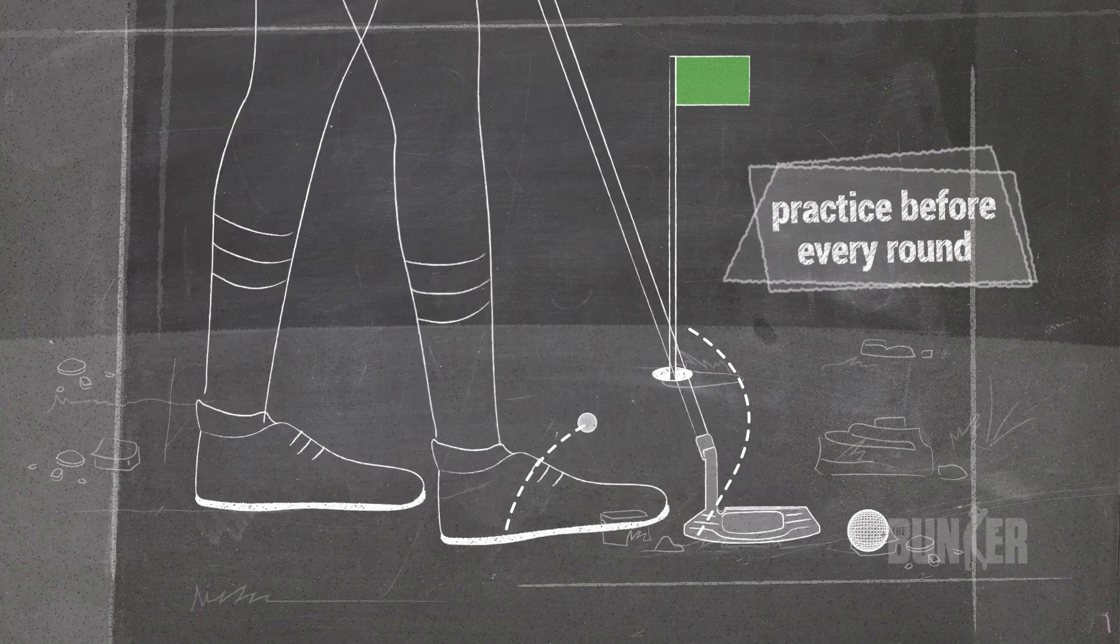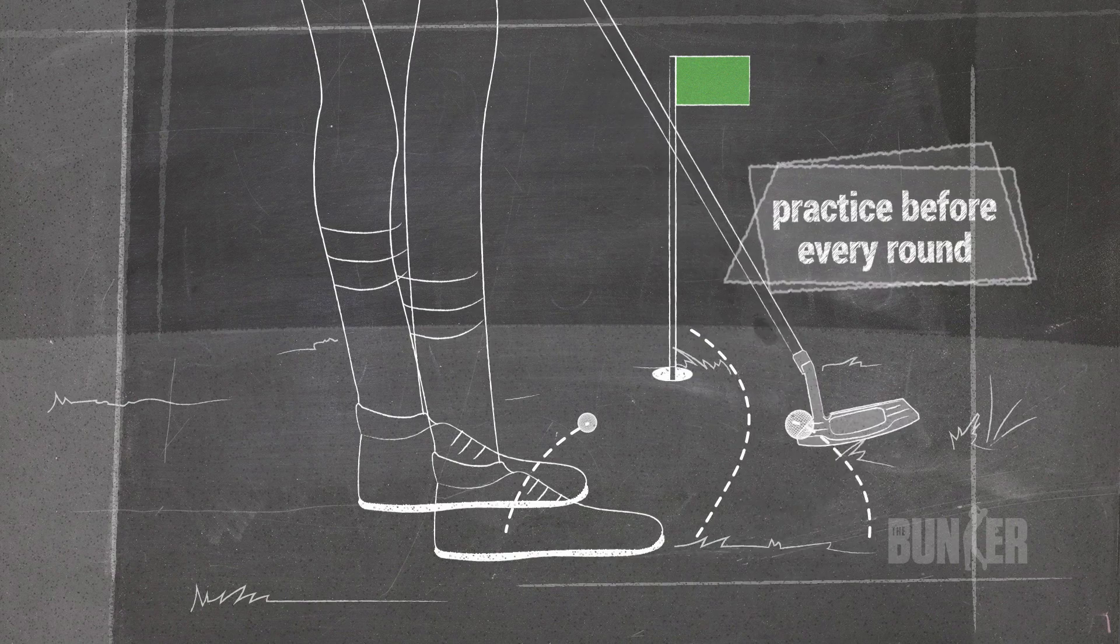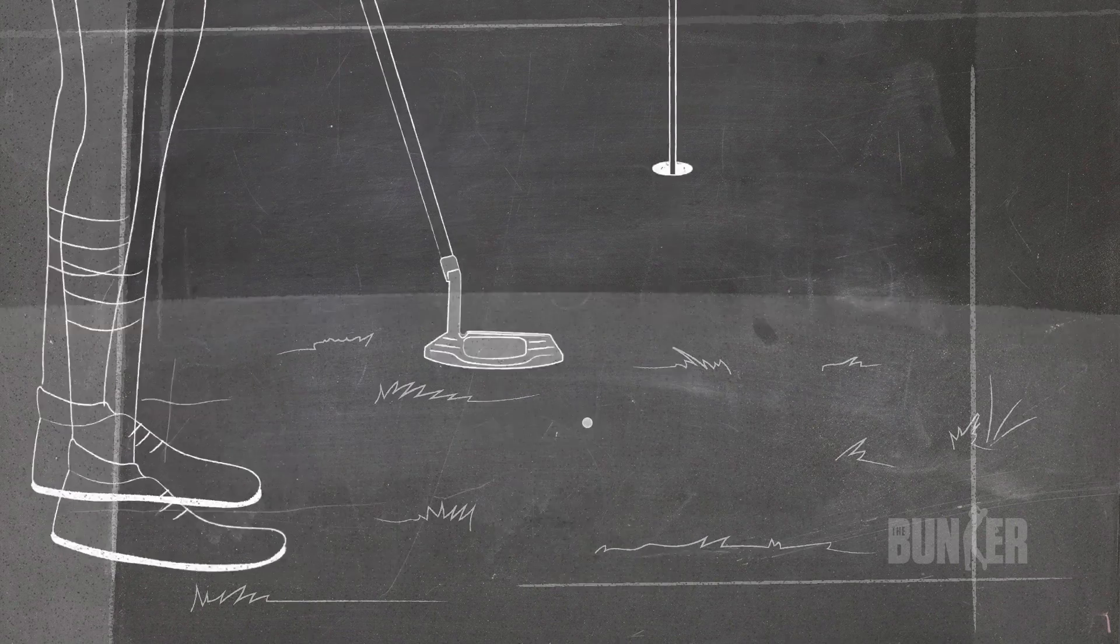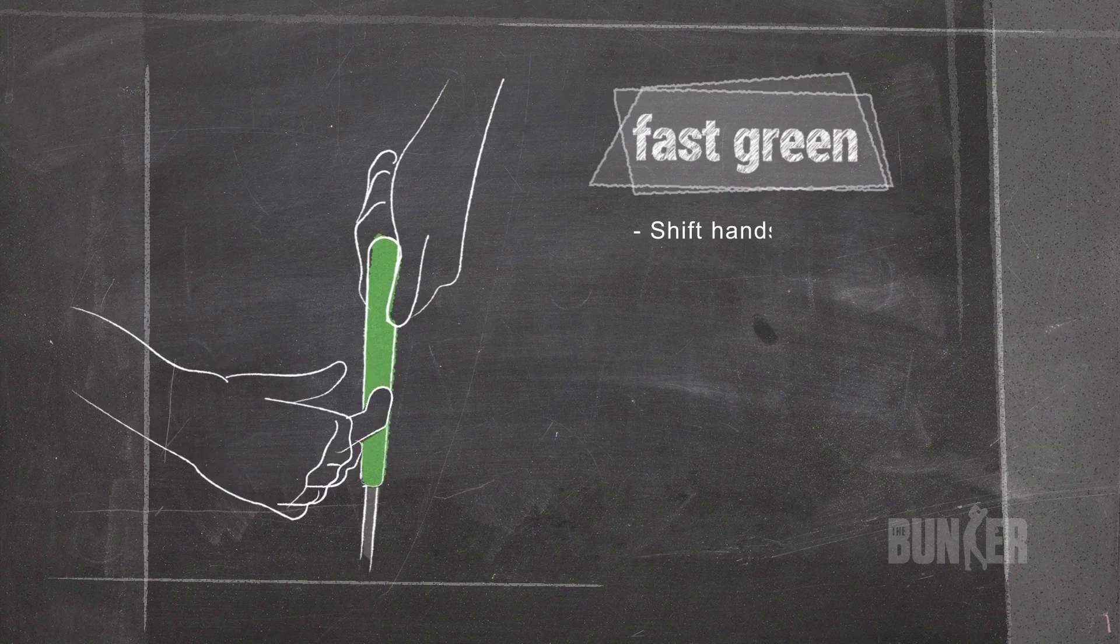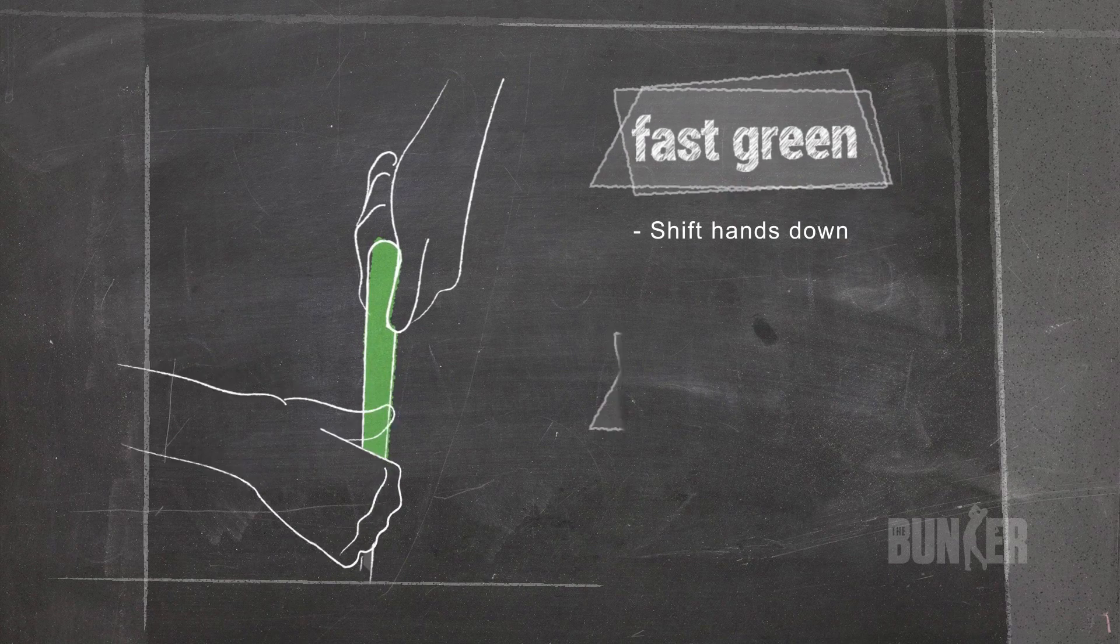You should practice on the putting green before every round to see how fast or slow the ball travels on that particular day. If the green feels fast, shift your hands down the grip to reduce your swing.